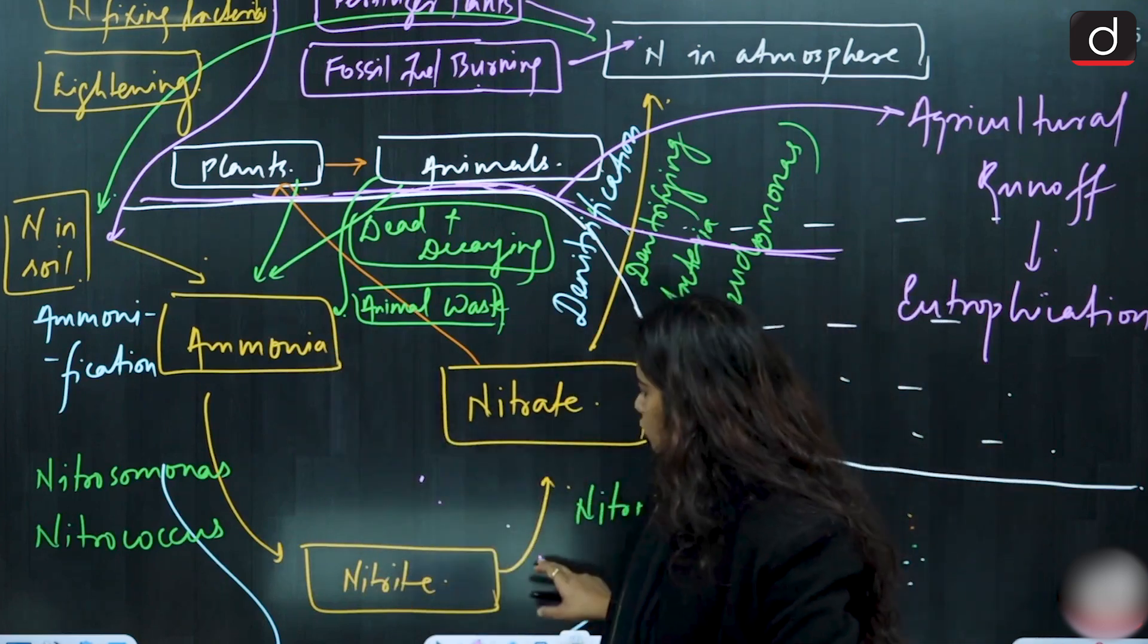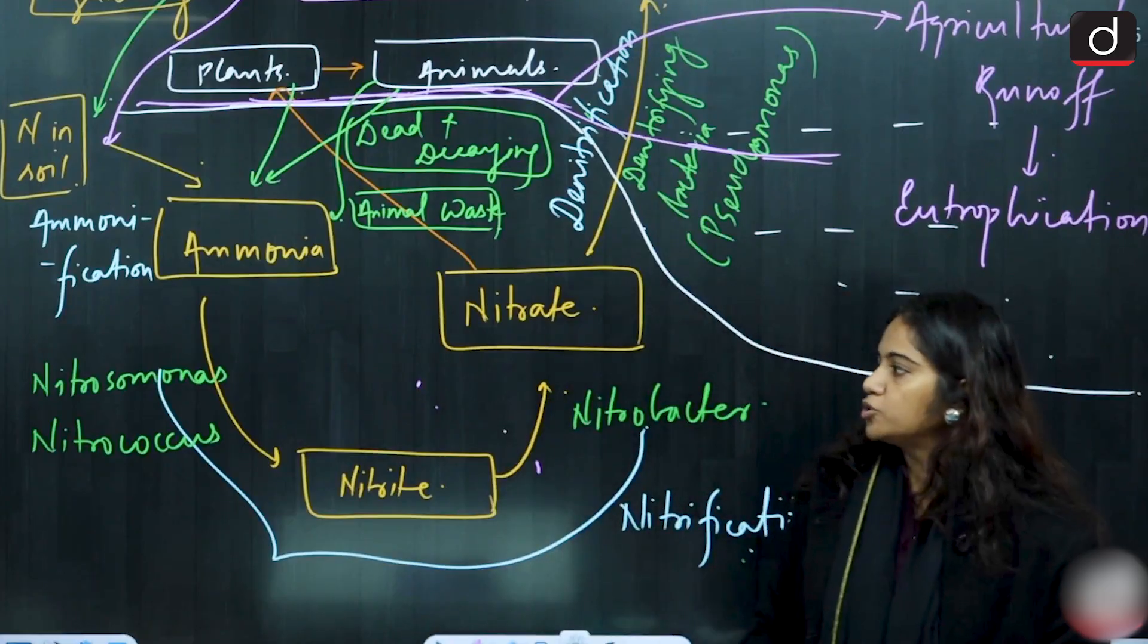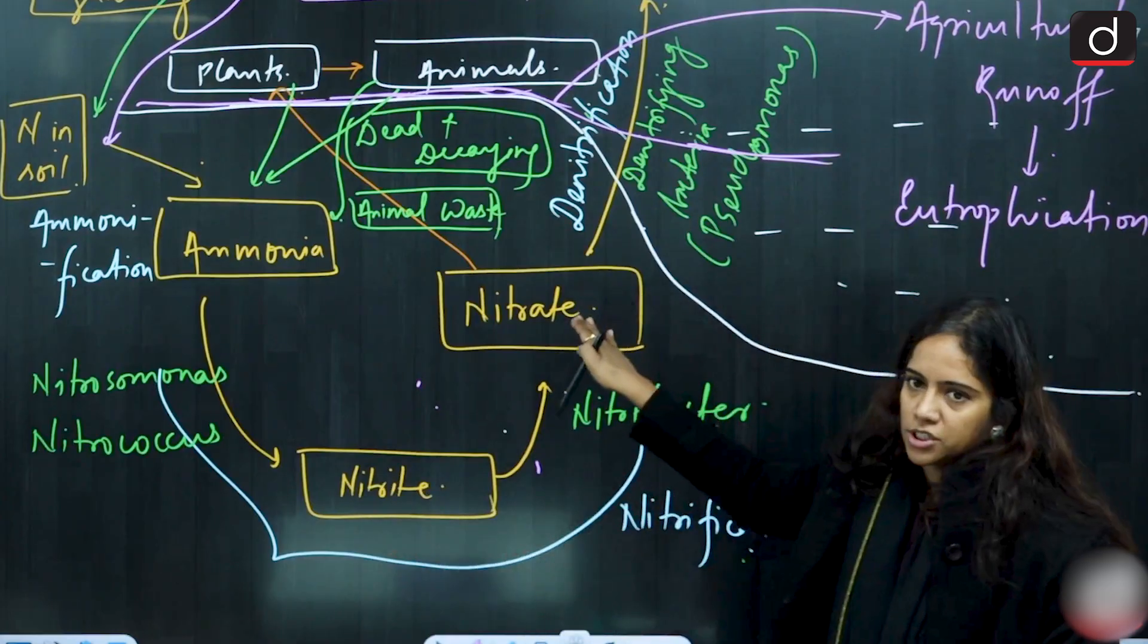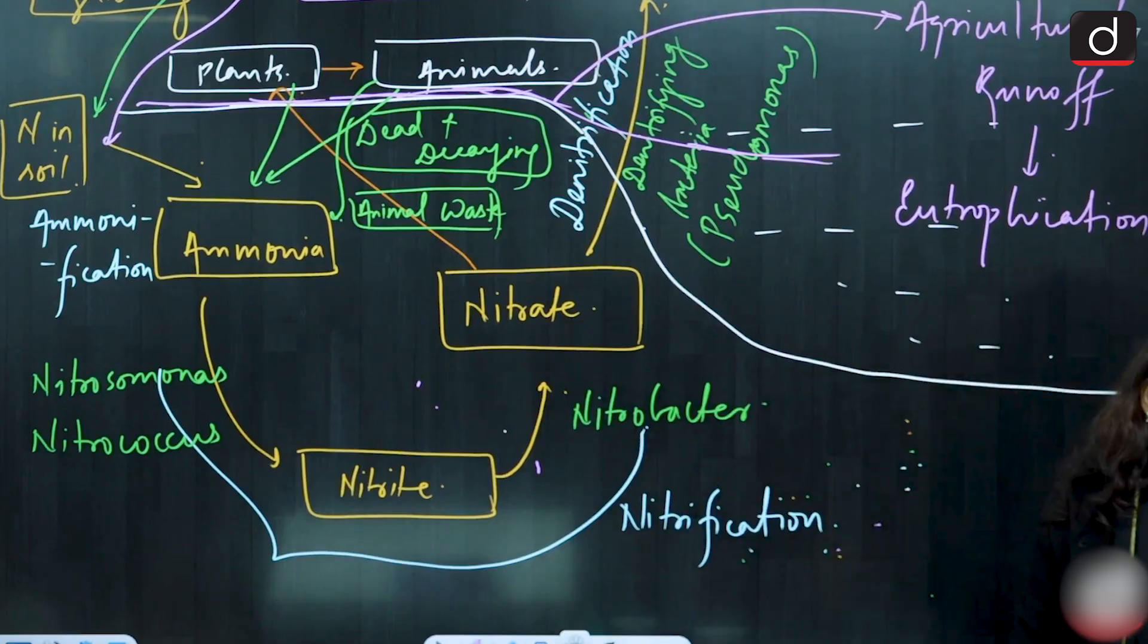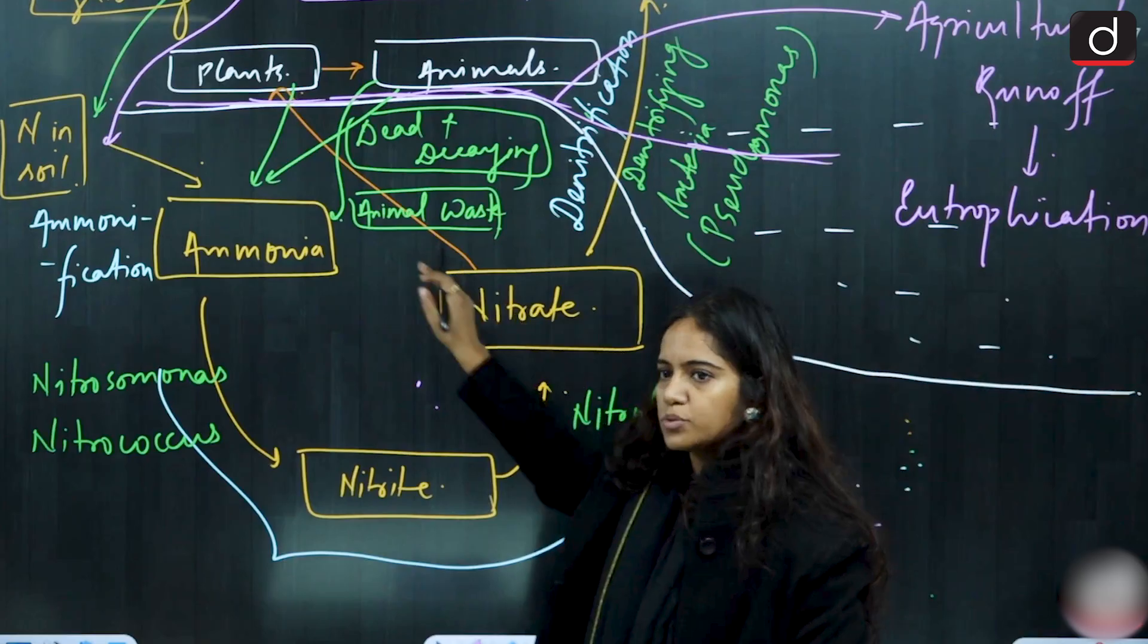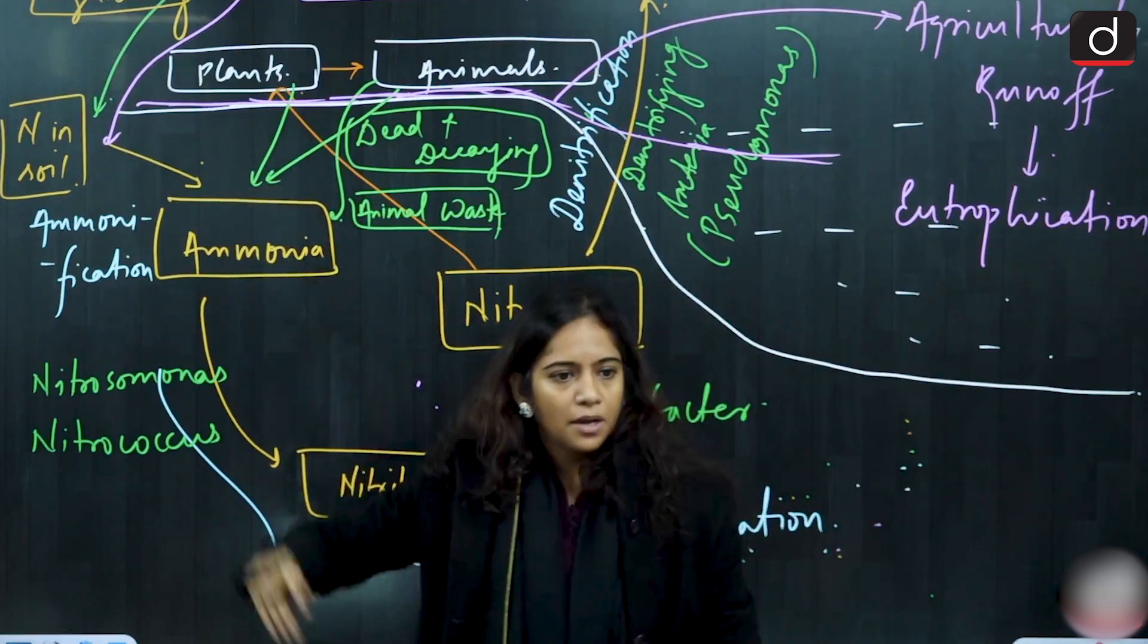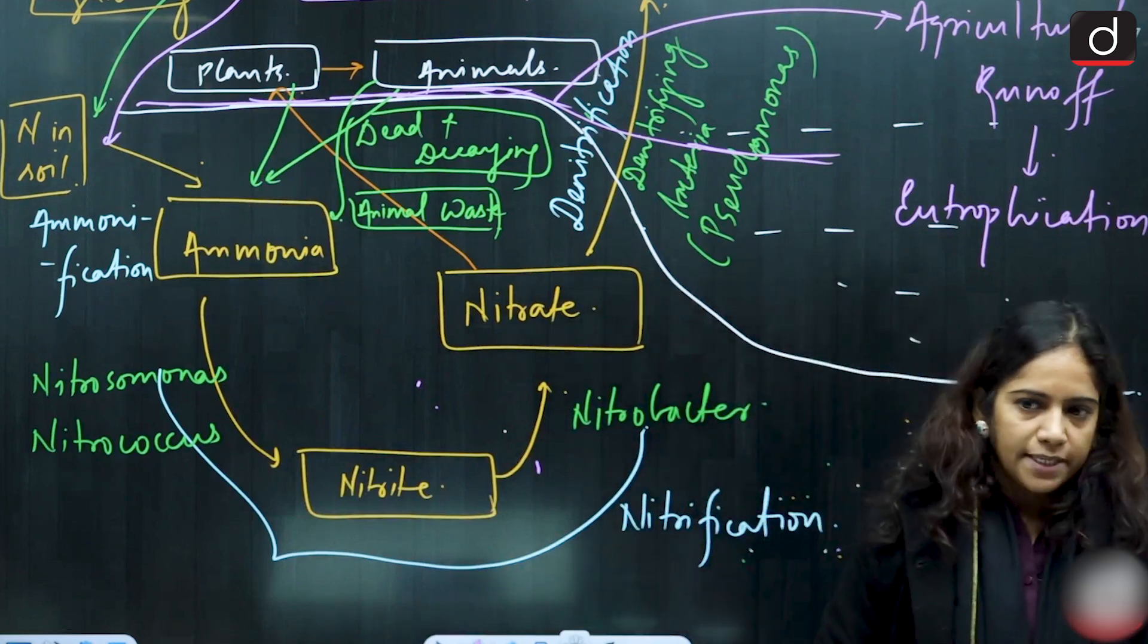The process from ammonia to nitrites is taken by a group of bacteria which are known as nitrosomonas and nitrococcus. Nitrite is then converted to nitrate which is being undertaken by nitrobacter, another group of bacteria. Now, this is what is being taken up by the plants. It is neither ammonia nor nitrite. It is the nitrate that the plants take up which is known as assimilation of the nitrogen or assimilation stage.